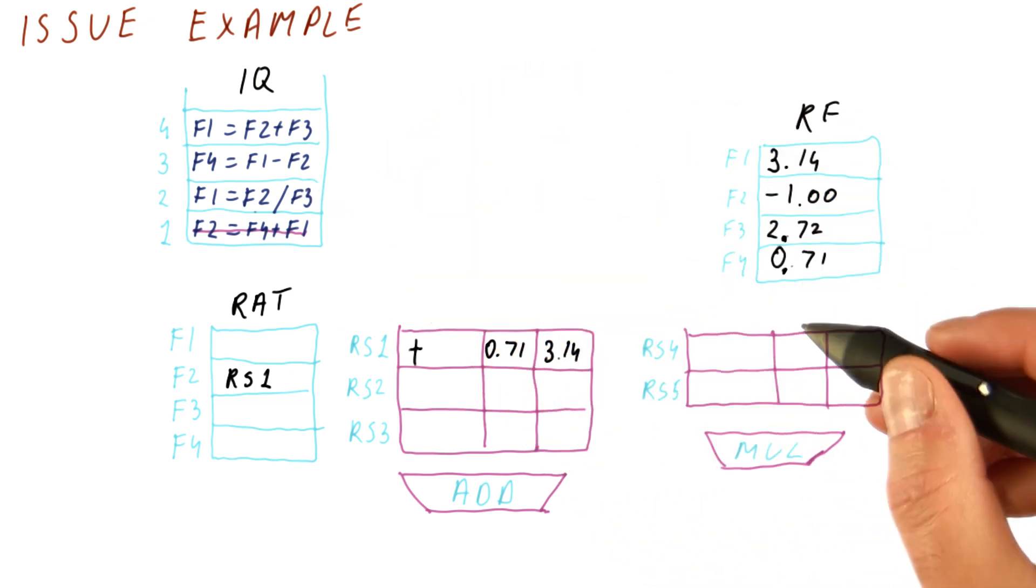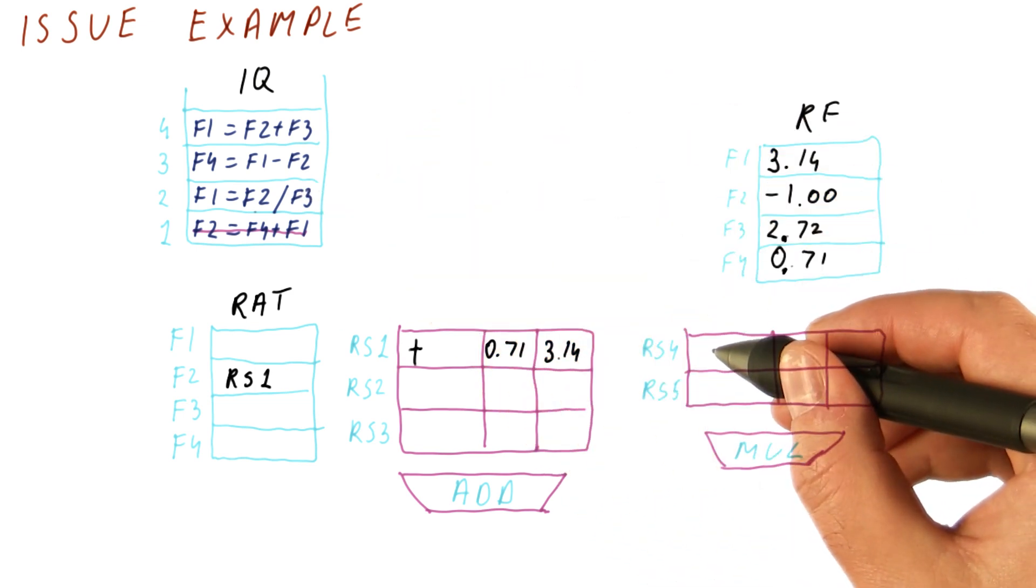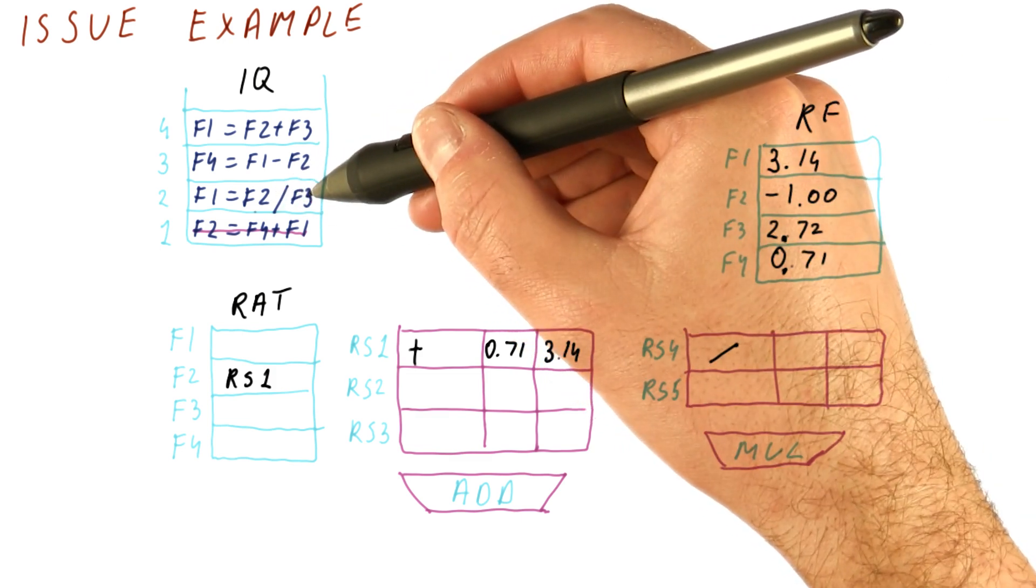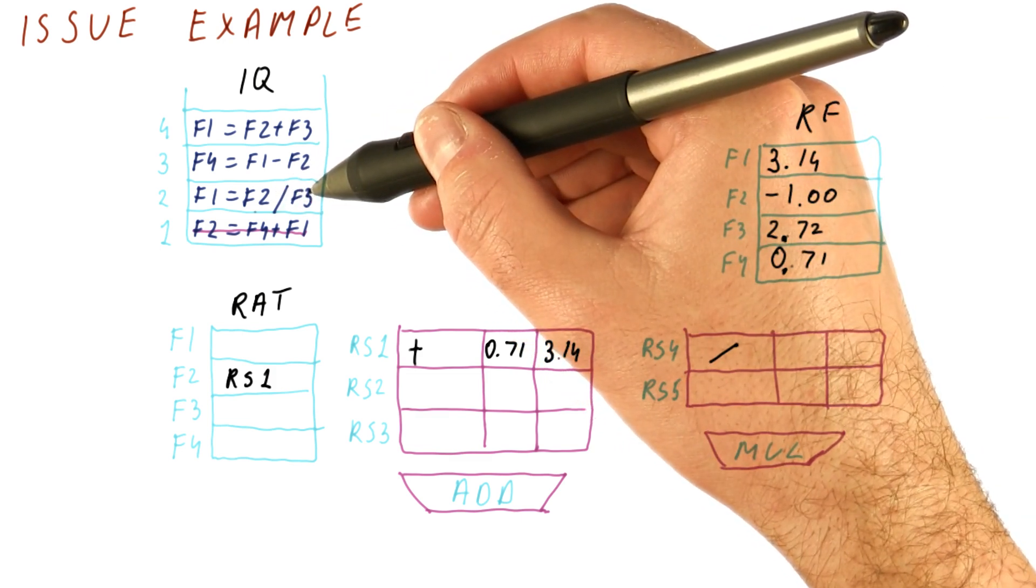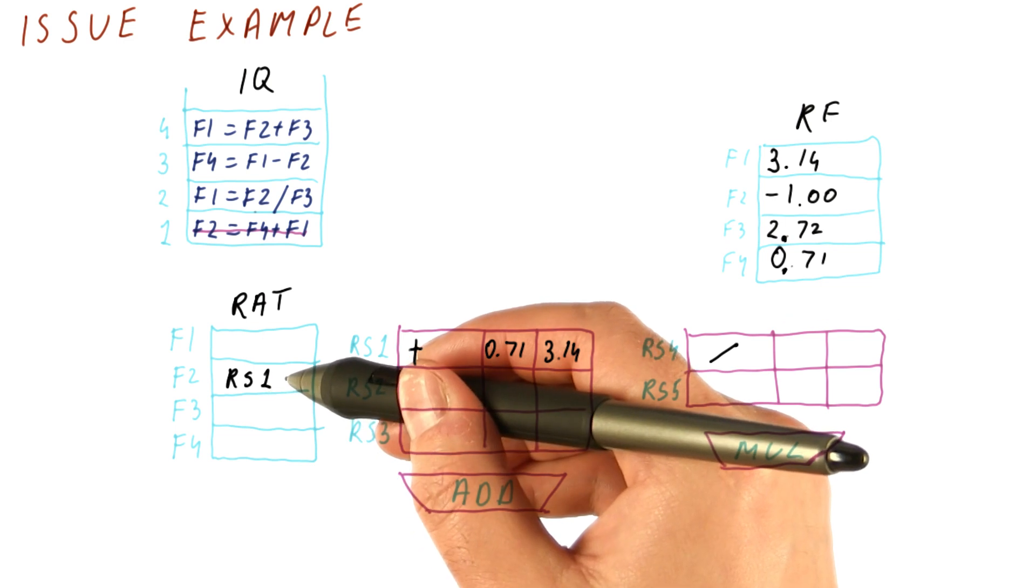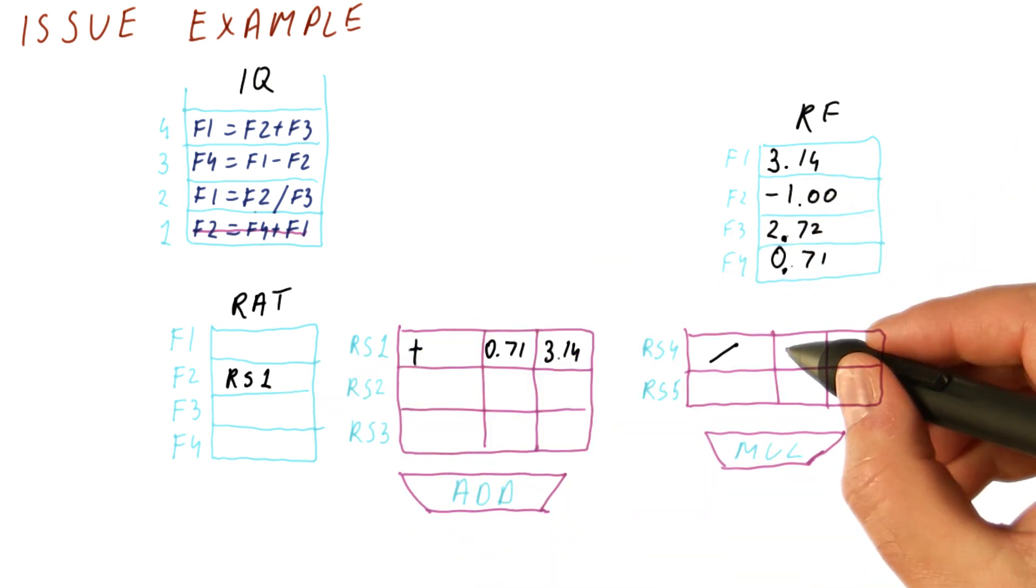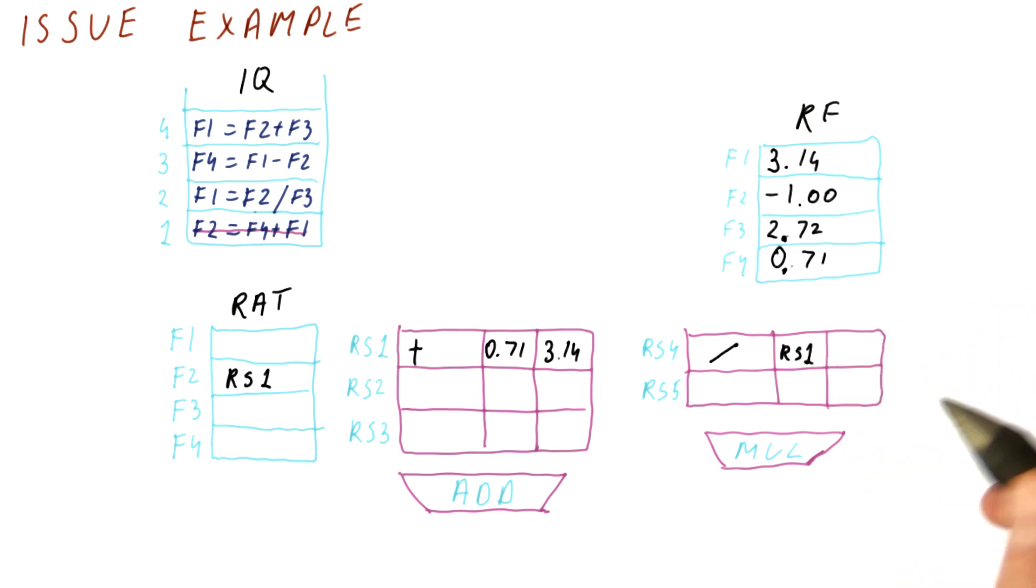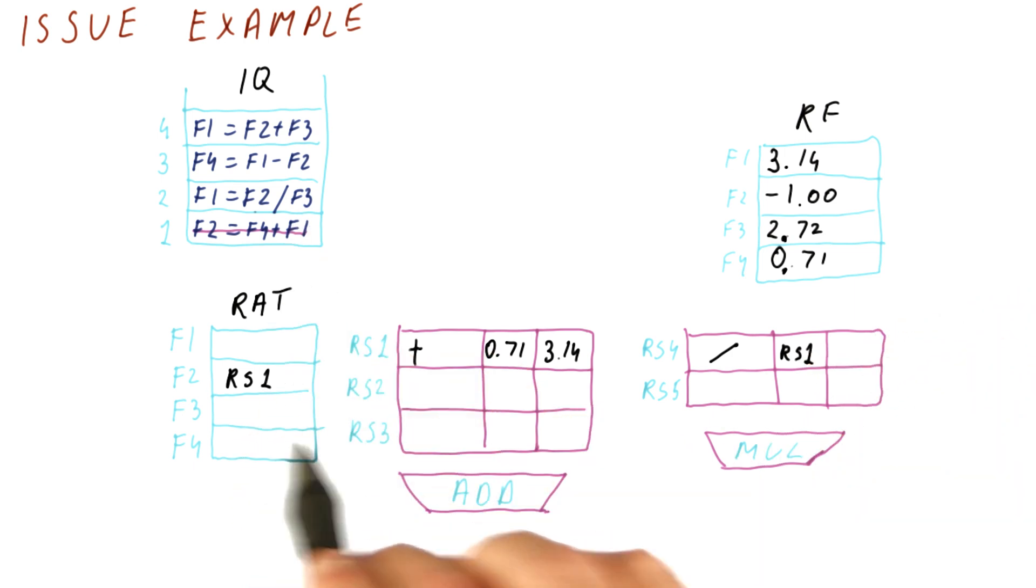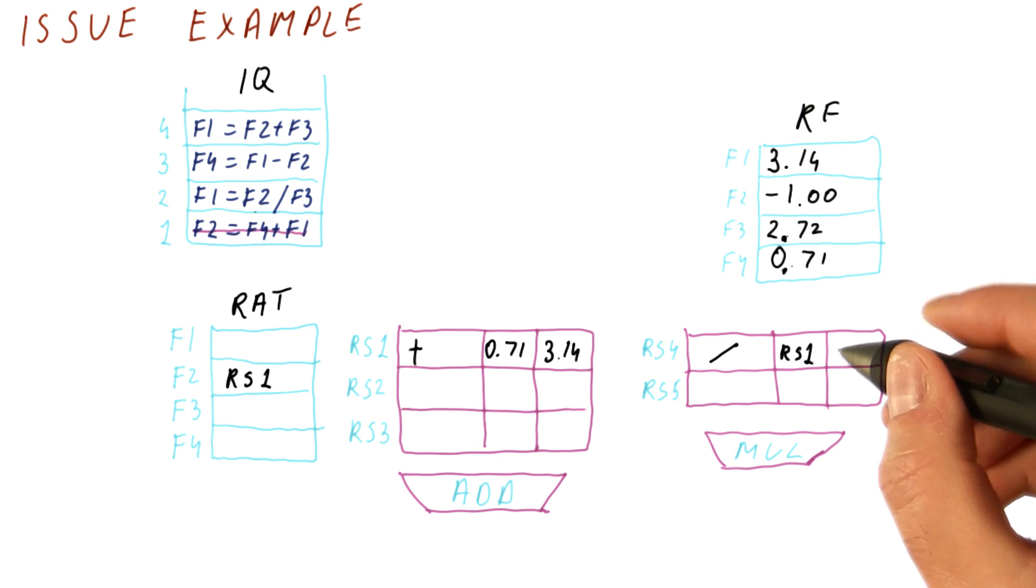This is a divide. We need to find a free reservation station here. Say it's a divide. F2 and F3 are going to be the parameters for this instruction. F2 comes from RS1, so we cannot simply read this value here. We're going to say here that RS1 is what we're waiting for. But F3 is available, so we're going to get 2.72 from the register file.